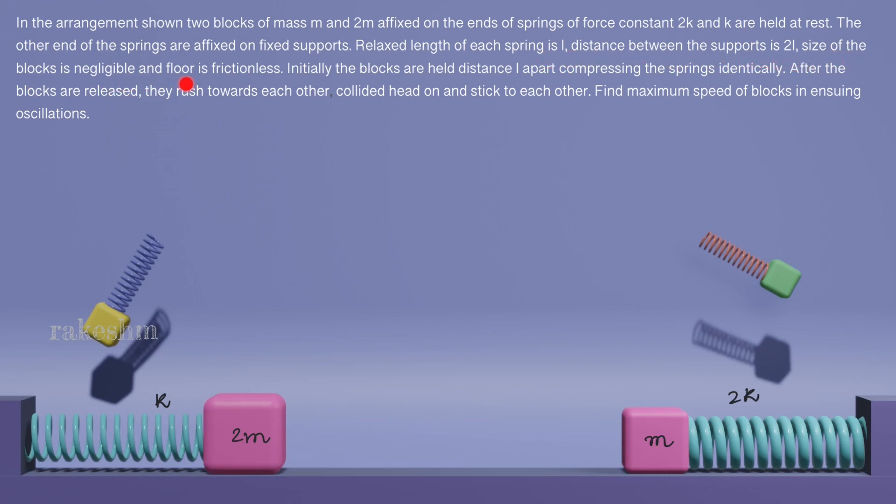Size of the blocks is negligible and the floor is frictionless. So the natural length of this spring and this spring is L. The separation between the supports is 2L. The block size is negligible but I have given it the size proportional to the mass so that it is easy for you to visualize and the floor on which they are sliding is frictionless.